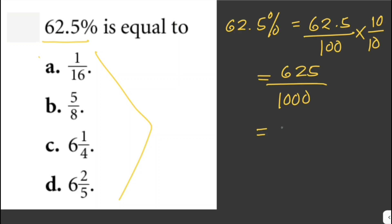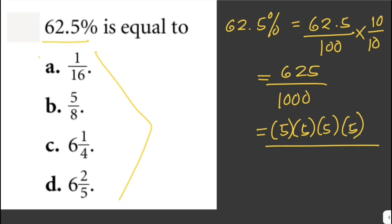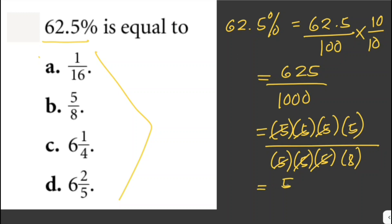Both 625 and 1000 are divisible by 5. 625 is equal to 5 times 5 times 5 times 5 times... we can cancel the three fives, and we are left with 5 over 8. Therefore, 62.5% is just equal to five over eight, so the answer here is letter B.